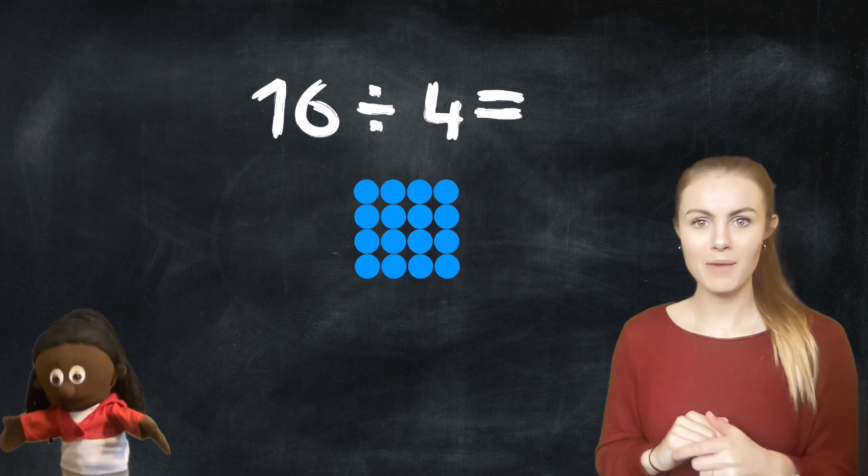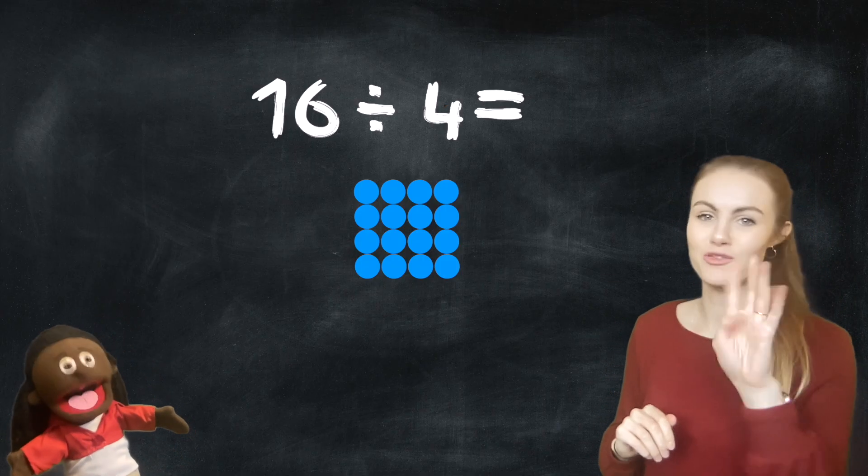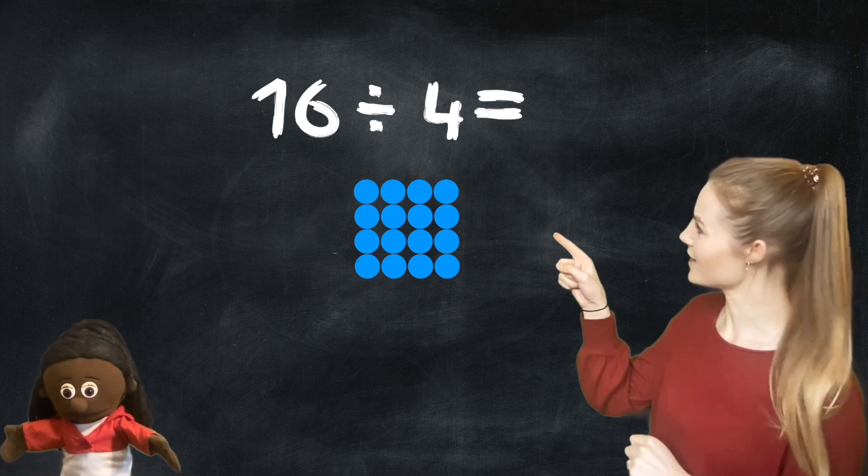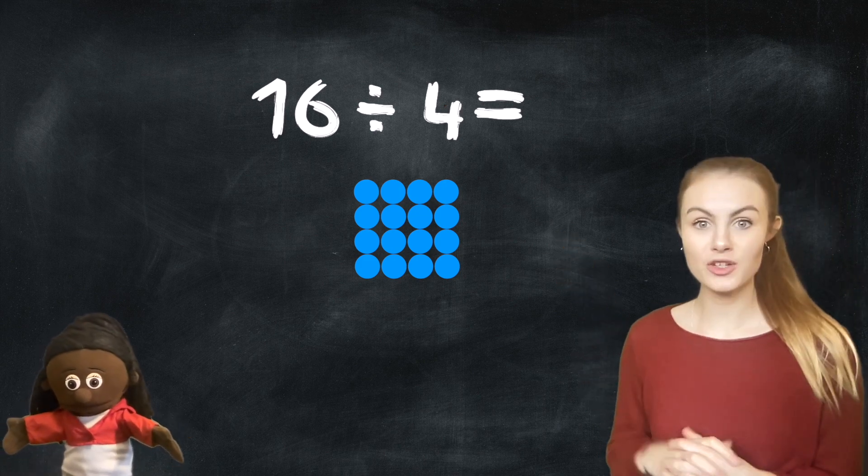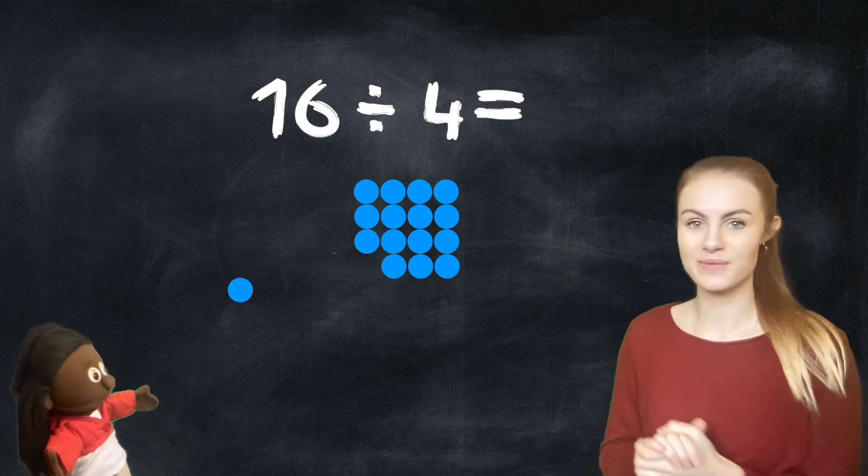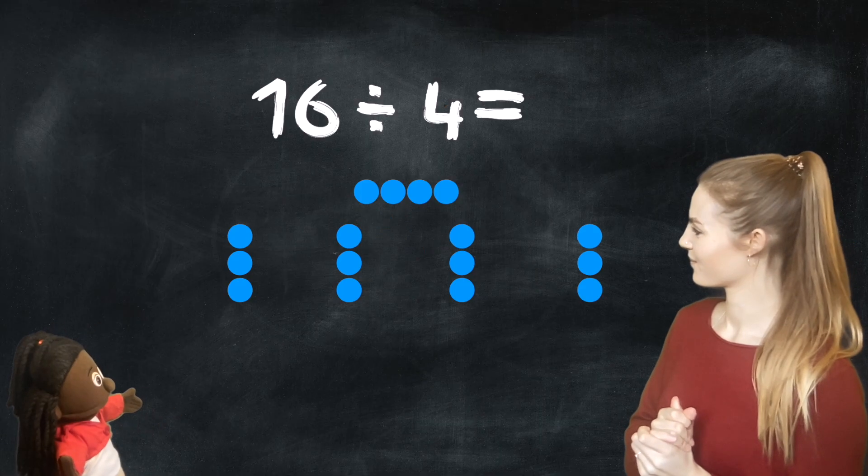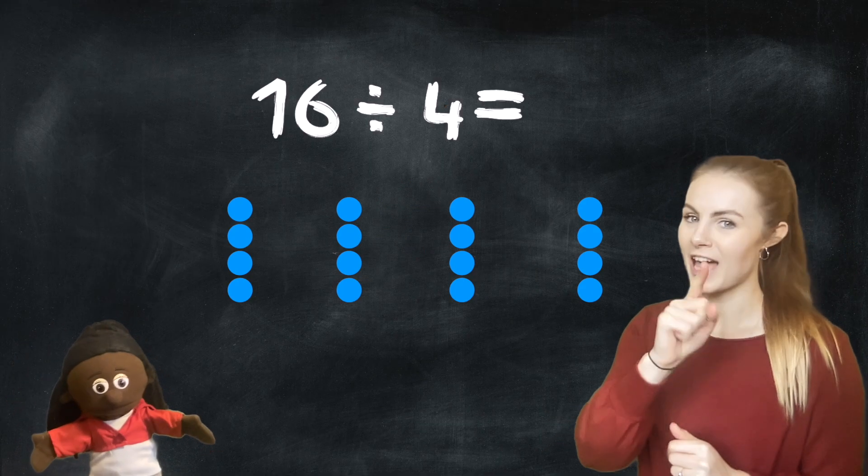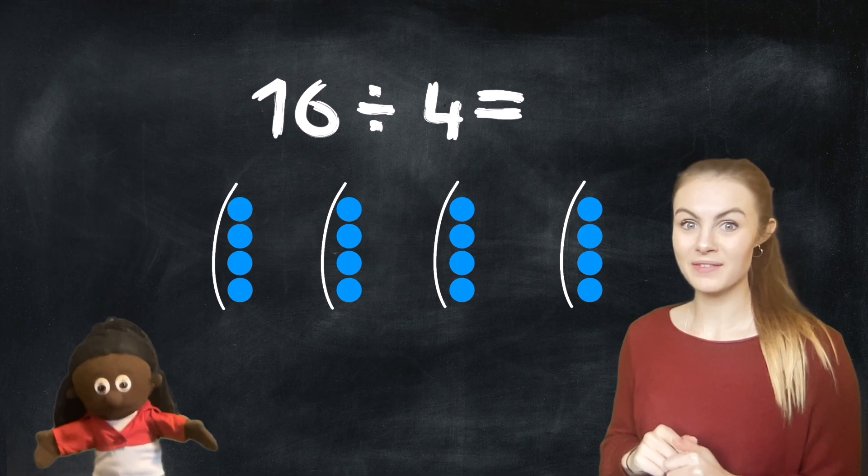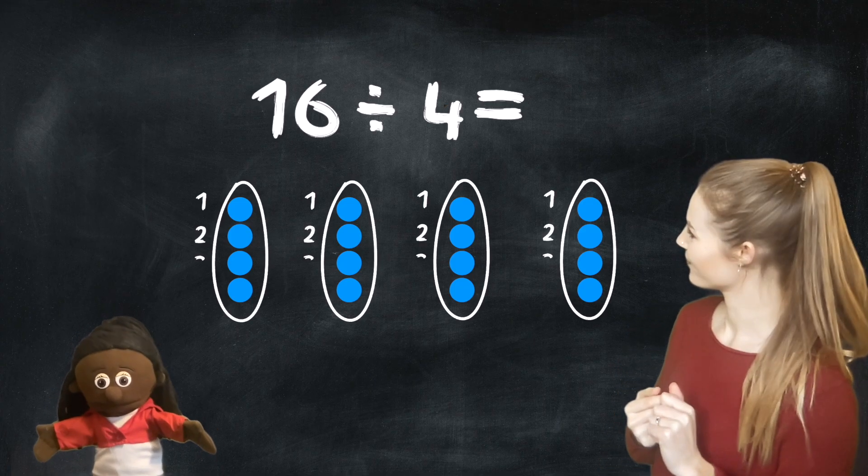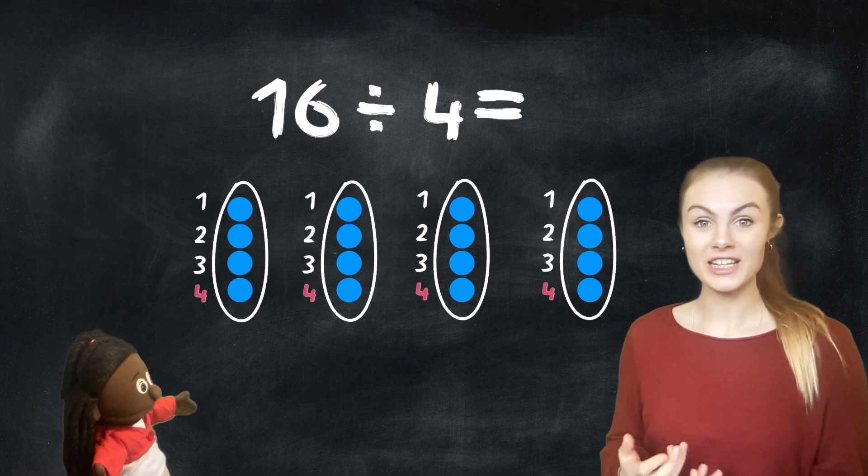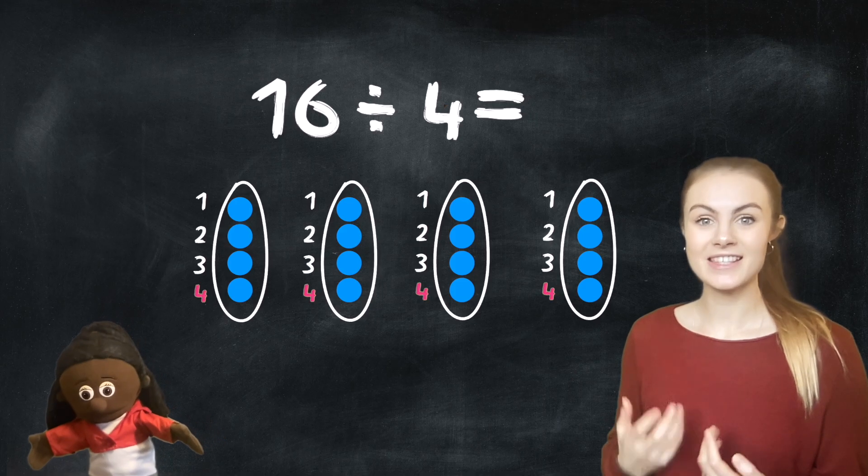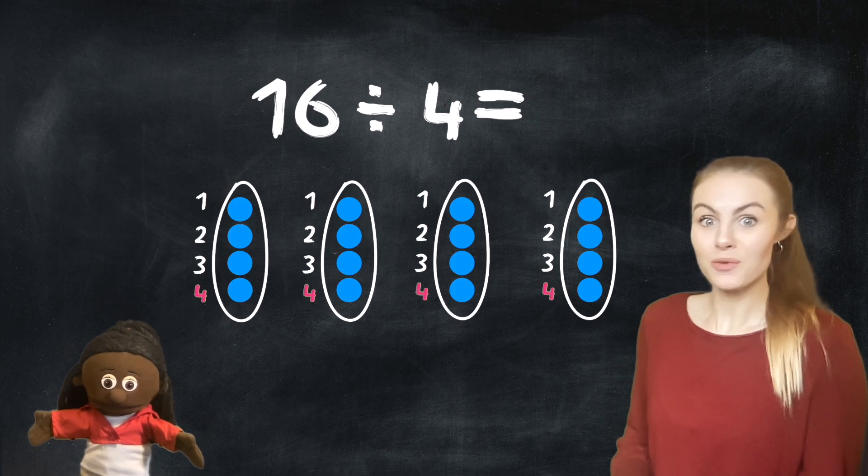We share them out between how many people? You're right, 4 people. 16 divided by 4. So let's share them into 4 equal groups. Okay, now what? We count how many there are in each group. And that gives us our answer. There are 4 in each group. So we can see that 16 divided by 4 equals 4.